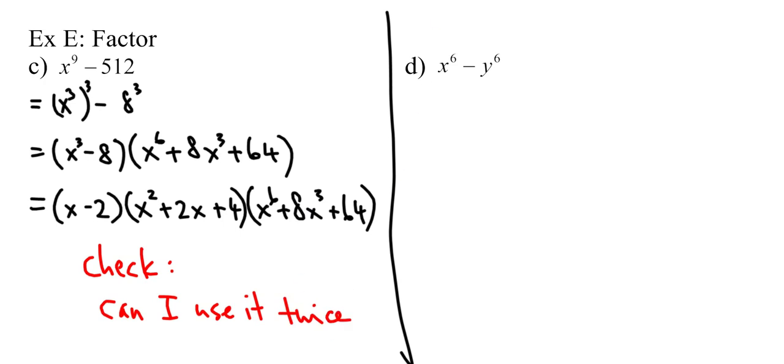And this last one, you'll actually notice that this is x to the 6 minus y to the 6, which means I could do it as a difference of cubes, as in I can do x squared to the 3 minus y squared to the 3. Or you can do it as a difference of squares. So you can do it as x cubed squared minus y cubed squared. See that? And so if you're deciding which one to do, you should start with the difference of cubes, if possible,